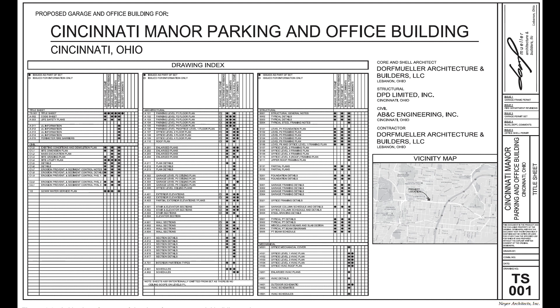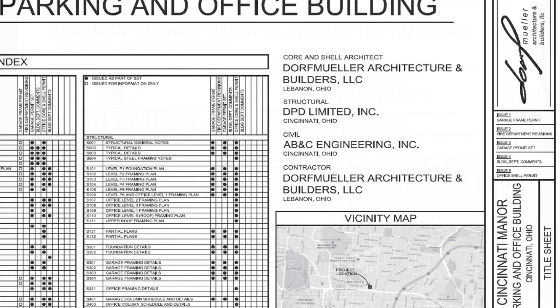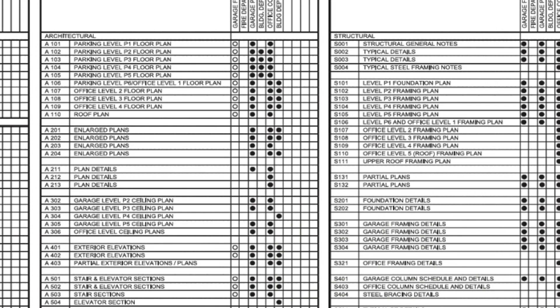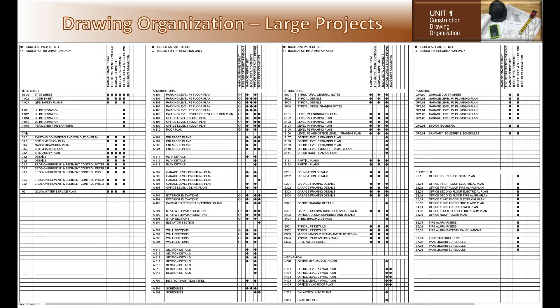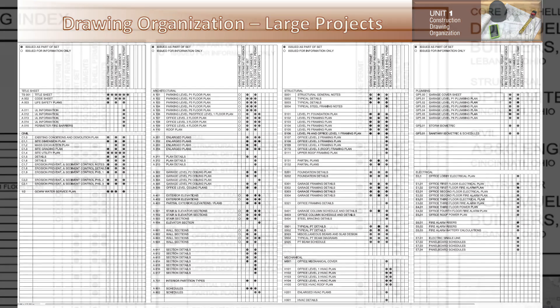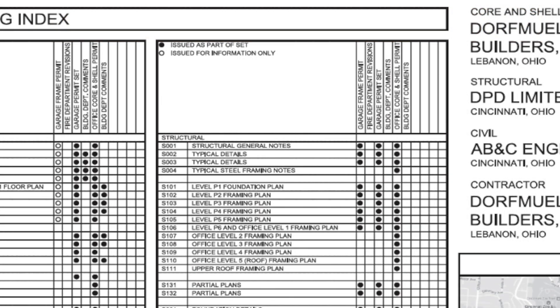The title page identifies the project name, location, contractor, architect, and civil and structural engineers. Also note the letter and number classifications, and also note the list of drawings and the last date issued for the project.